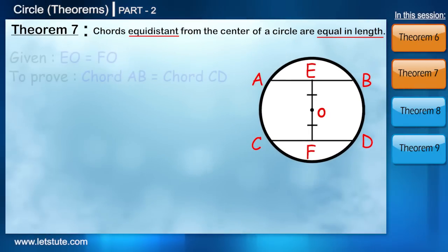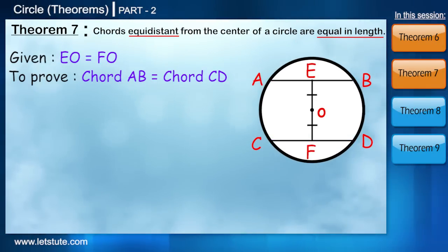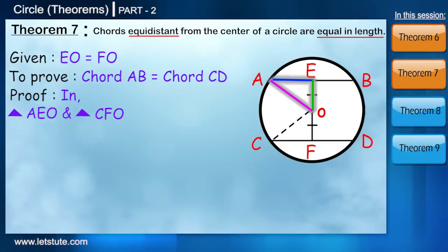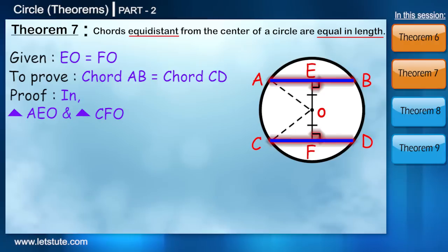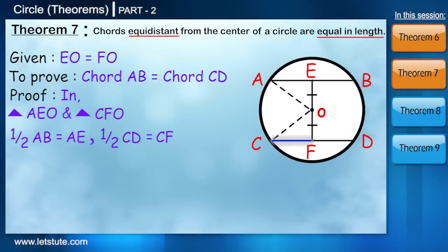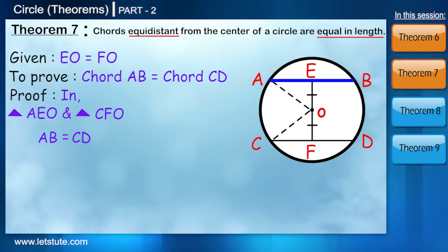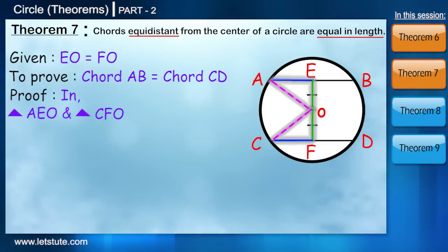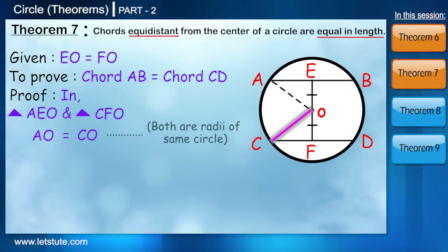Now we have to prove that the chords are equal. So if we can prove triangle AEO is equal to triangle CFO. We know that EO and FO are the perpendicular bisectors of the chords AB and CD respectively. Which means half of AB is equal to AE and half of CD is equal to CF. So if we can prove that AE is equal to CF, we will be directly able to say that AB is equal to CD. So in triangle AEO and triangle CFO, AO is equal to CO because it is the radii of the same circle.